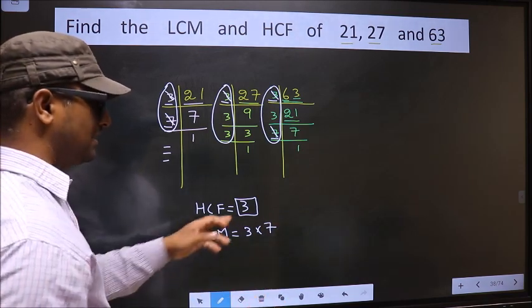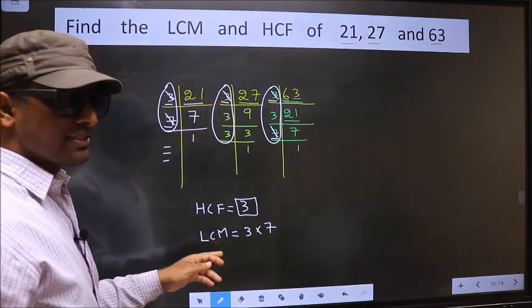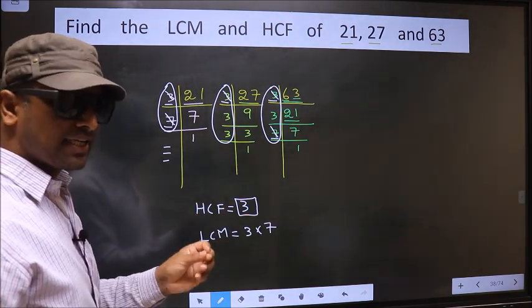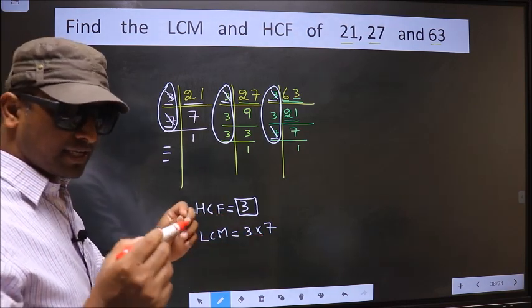I repeat, HCF means the number should be present in all the 3 places. For LCM not like that. Whether it is present in 1 place or 2 places, till you cut and write here. Understood?